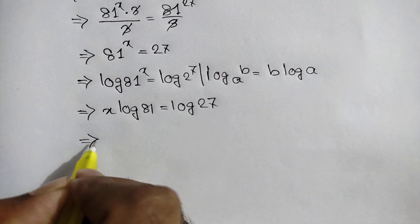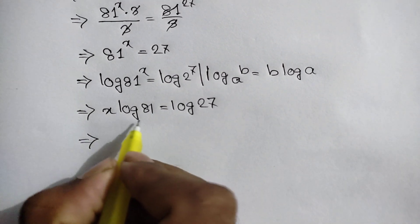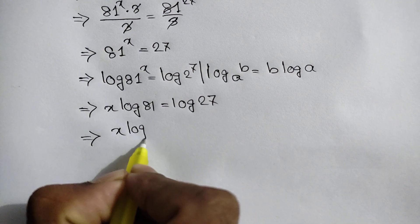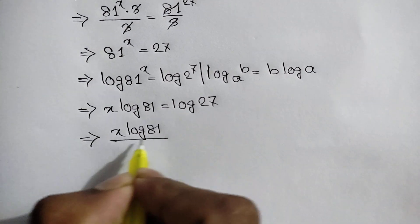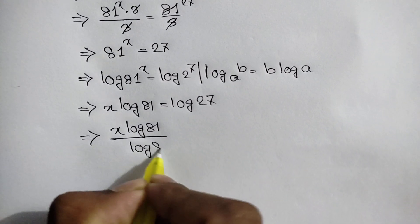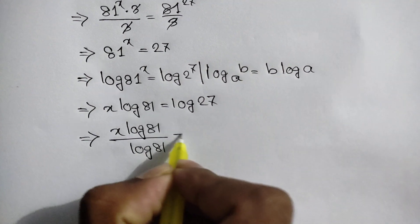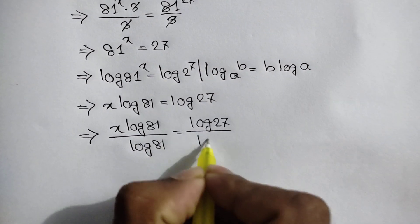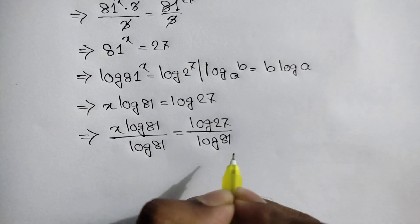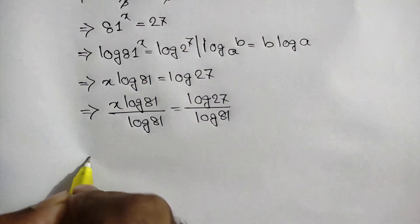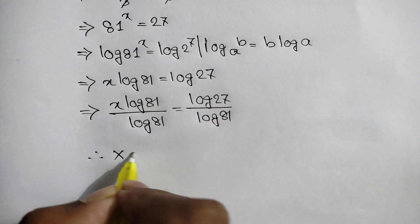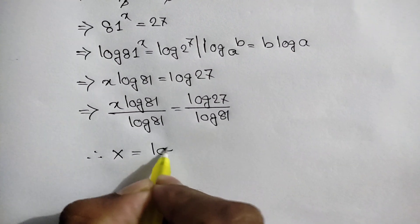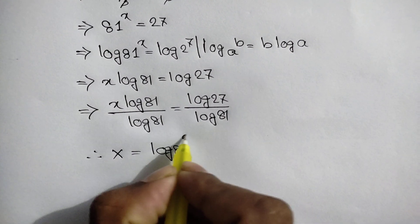Now we divide both sides by log 81, so x times log 81 over log 81 is equal to log 27 over log 81. Therefore x is equal to log base 81 of 27. This is the right answer.